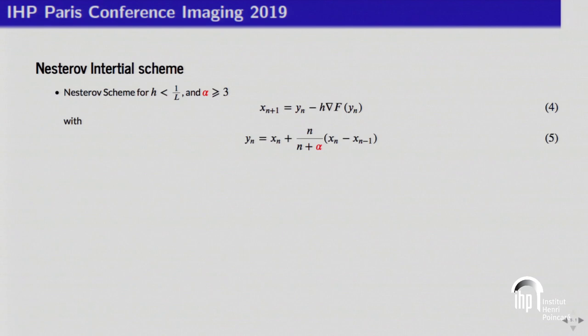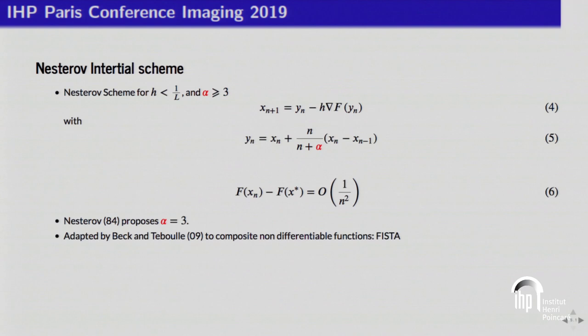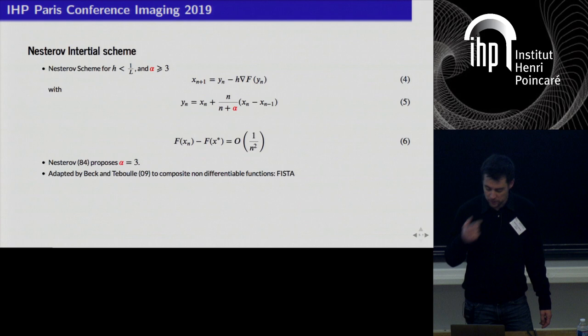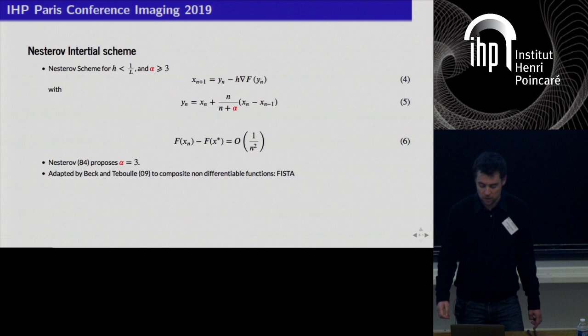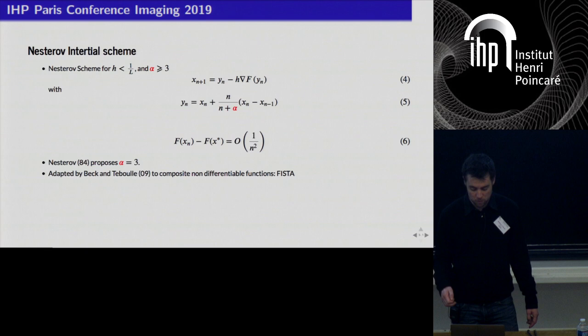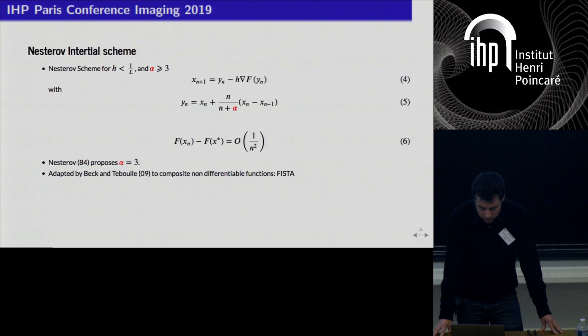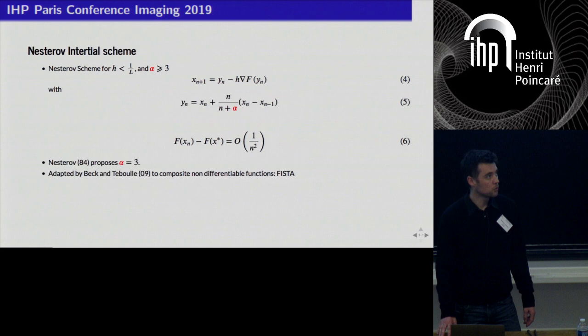In 1984, Nesterov proposed an acceleration scheme — a variant of gradient descent. In this scheme, x_{n+1} is computed by a gradient descent not on the point x_n, but on the point y_n, which is very close to x_n, with an inertial term involving n over (n + alpha) times (x_n minus x_{n-1}). With this slight modification, we can achieve a rate of 1 over n squared.